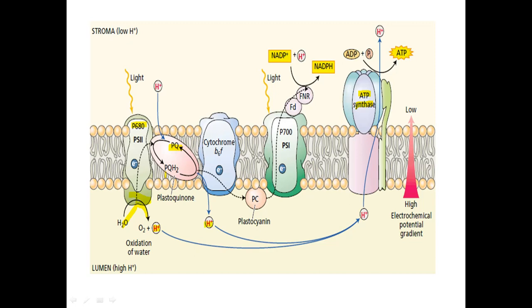Towards the lumen side, photolysis occurs and protons are released. A proton also diffuses from the stroma through plastoquinone, which is reduced to plastohydroquinone. These protons diffuse back from the lumen through the ATP synthase enzyme and are released into the stroma. There, ADP reacts with one phosphate group in the presence of protons to synthesize ATP, which is also used in the carbon fixation reaction.